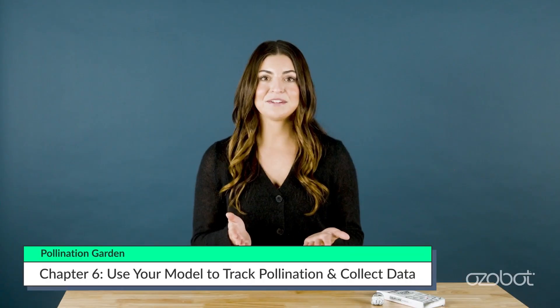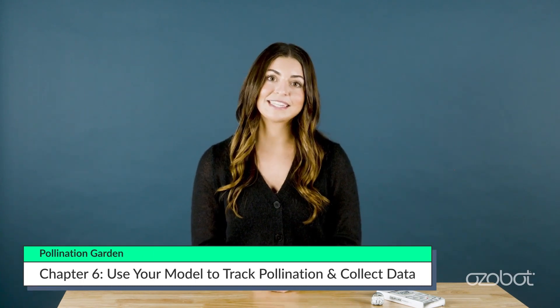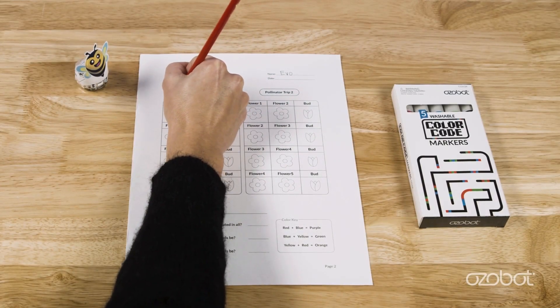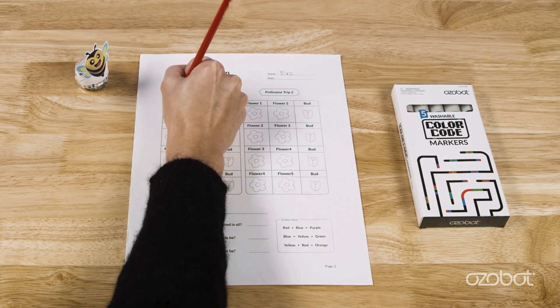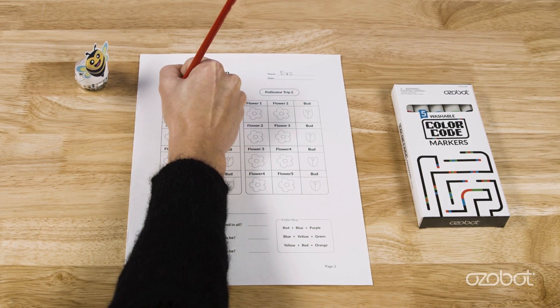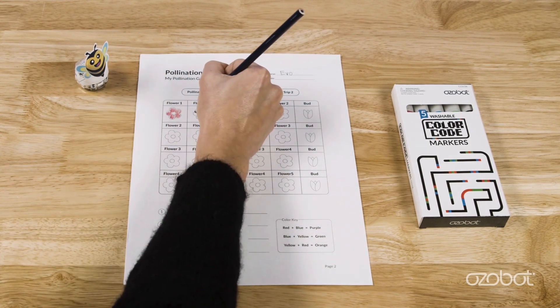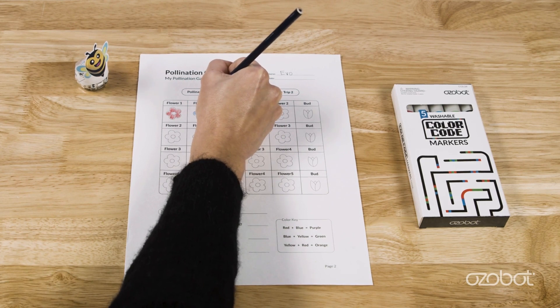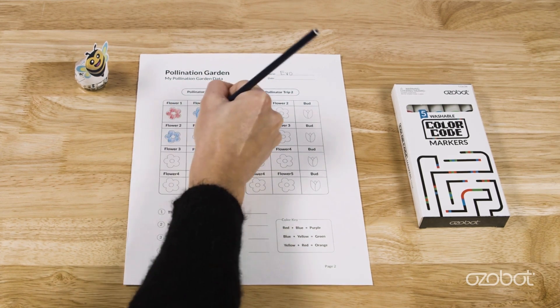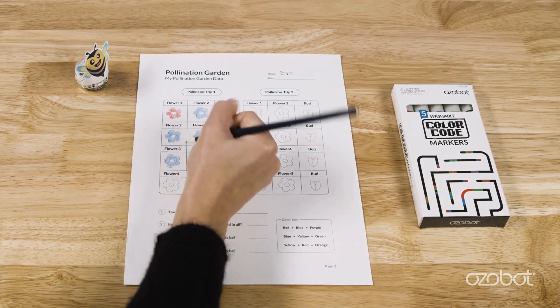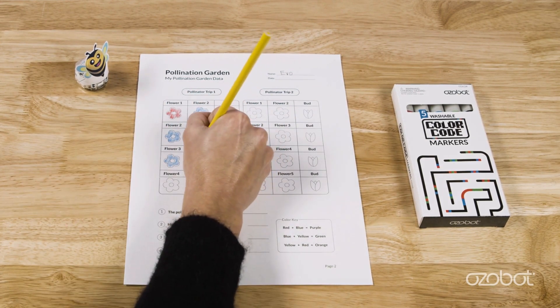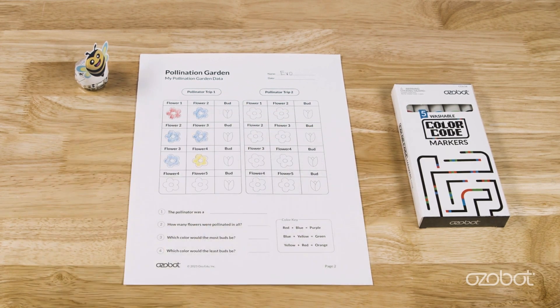Now use your model to collect information about the flowers that are pollinated. Look at the pollination garden data sheet and run your pollinator bot two more times. Complete trip one first. Here's example data from a first trip: the bot went to a red flower, so flower one is colored red; next it moved to a blue flower, so flower two is blue; then to another blue flower for flower three; and finally to a yellow flower for flower four.